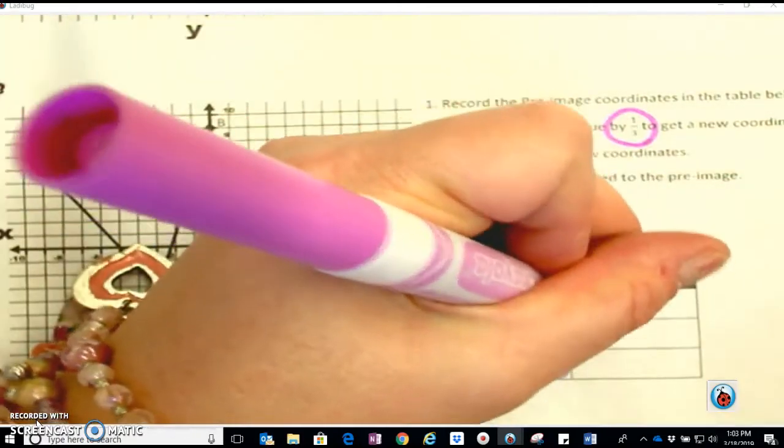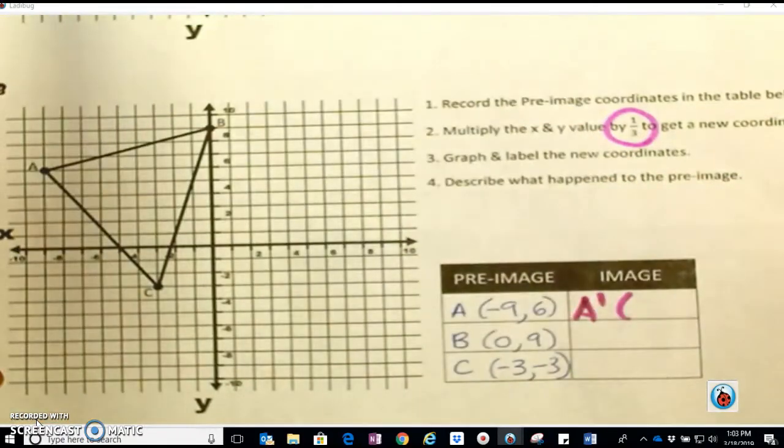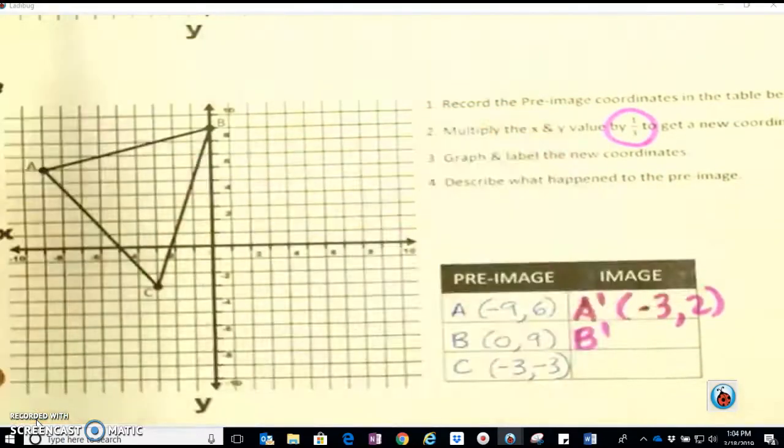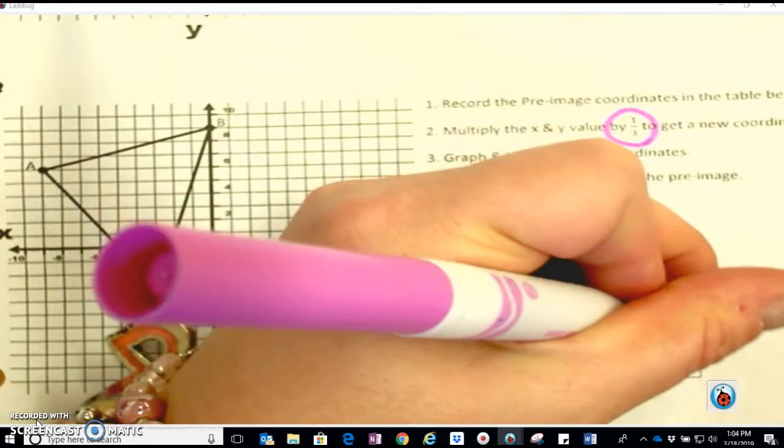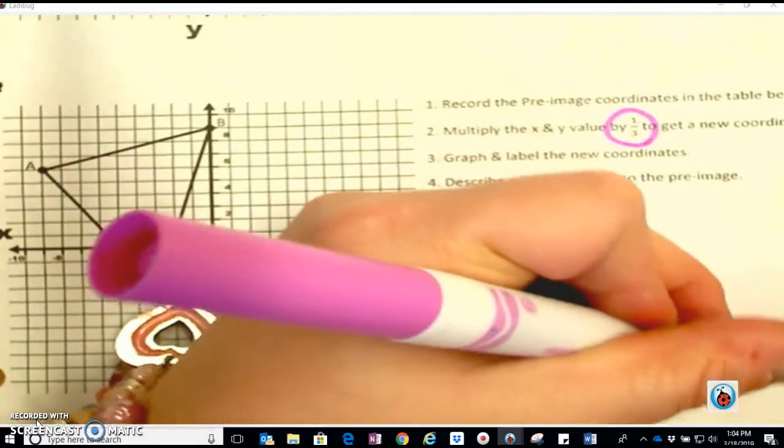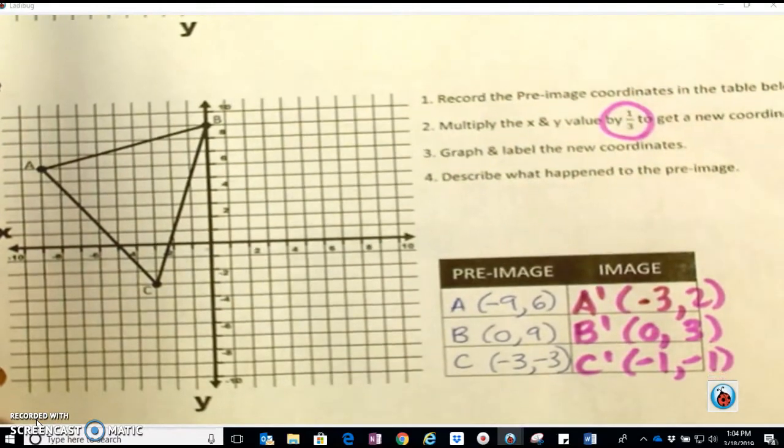So we get A prime, basically dividing by 3, so we're going to get negative 3, 2. B prime is going to be 0, 3. And C prime is going to be negative 1, negative 1.